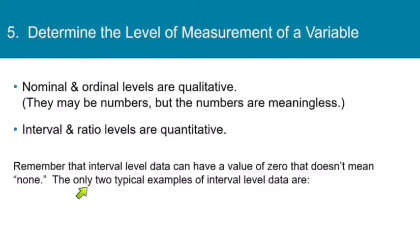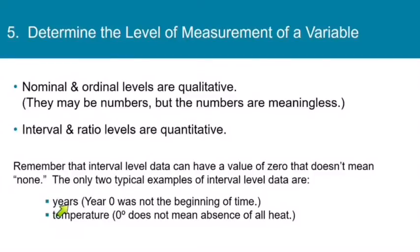So now remember that interval level data can have a value of zero that doesn't mean none. The only two examples of interval data that we usually come across are years, like year zero was not the beginning of time, and temperature, like zero degrees does not mean the absence of all heat. And when I say years, I mean years AD and years BC, like 1987 and 2005. We don't mean years of age, like three years old, five years old. That would be ratio level.